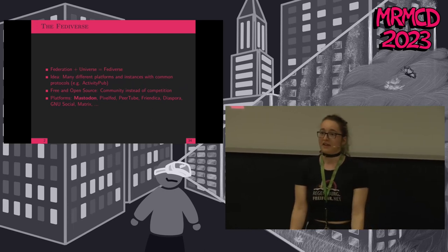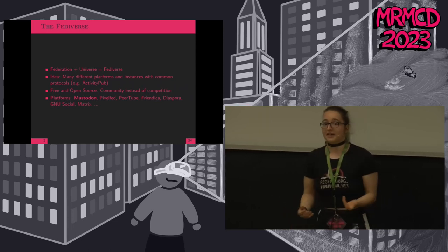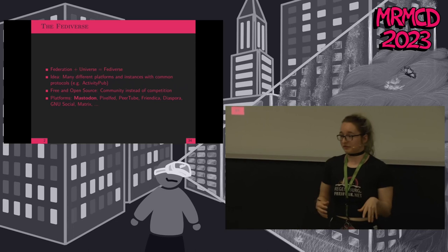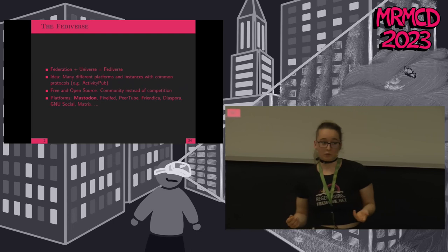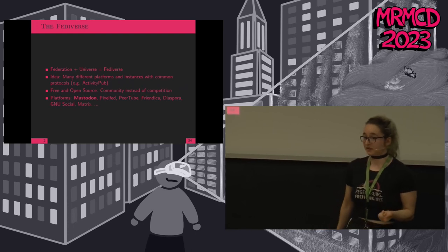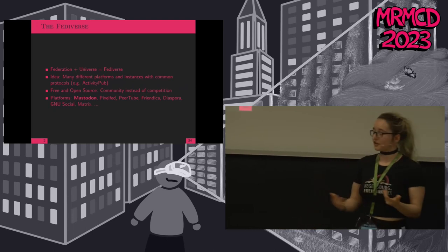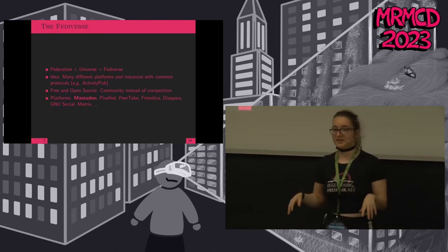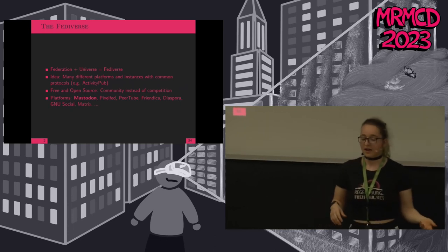Instead of fighting against each other and luring users away, you can interact with each other and run it for your own instance. We will focus on the microblogging platform Mastodon, but there are several more like Pixelfed for sharing images, PeerTube for videos, Friendica, Diaspora, GnuSocial, and Matrix — the last three also using protocols other than ActivityPub.